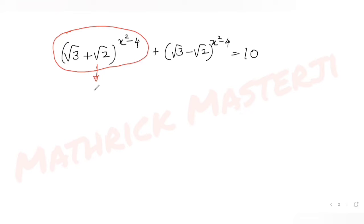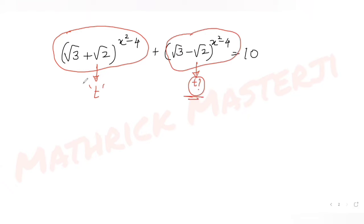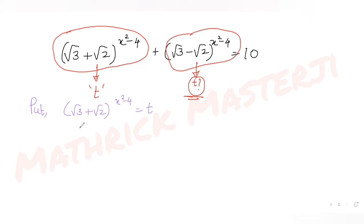Let t = (√3 + √2)^(x²−4). We'll express the second part of the left-hand side in terms of t as well. To do that, let's find 1/t.